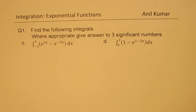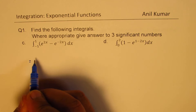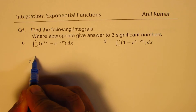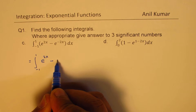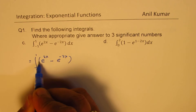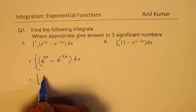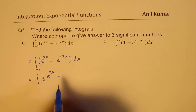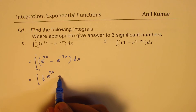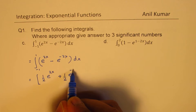Now let's take the definite integrals, where we may need to use a calculator. We need to integrate from minus 1 to 1: e to the power of 2x minus e to the power of minus 2x dx. Integrating gives half e to the power of 2x plus half e to the power of minus 2x, evaluated from minus 1 to 1.